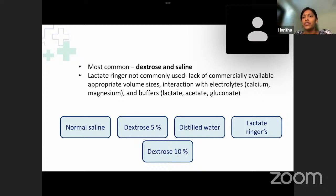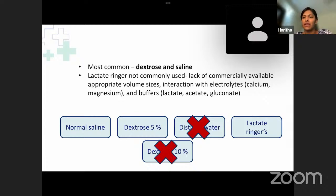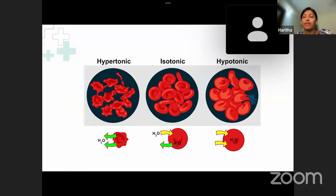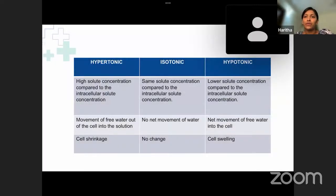For basic understanding: which among common fluids cannot be used as an IV diluent? The answers are distilled water and dextrose 10%. To understand why, you need to be familiar with the term tonicity. Hypertonic solutions contain a higher solute concentration compared to the intracellular solute concentration. Through osmosis, free water moves out of the cell into the solution, resulting in cell shrinkage.